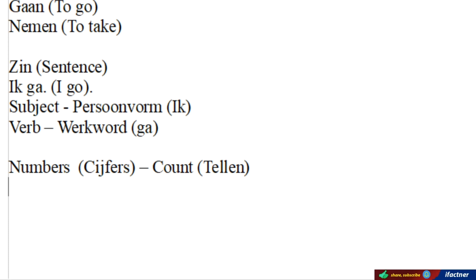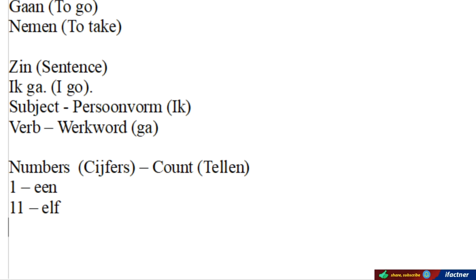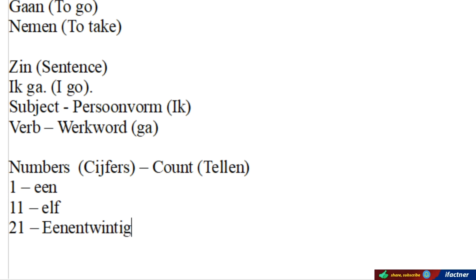I will give a link in the description in which I have covered all these numbers. For example, this is ein, this is elf, this is ein and twintig. And so on and so forth — hundred and thousand, million, milliard. Let's get it.